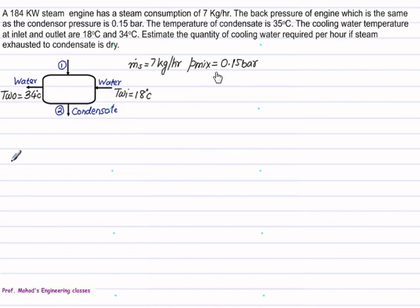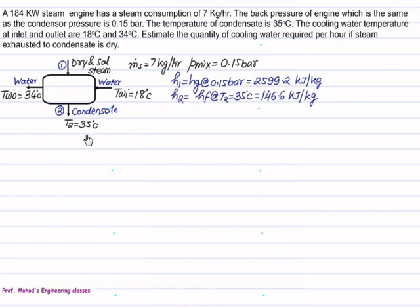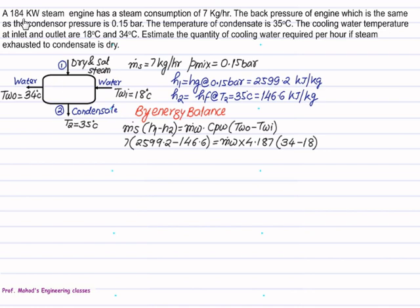The absolute pressure in the condenser P_mix is 0.15 bar. Temperature of condensate is given as 35. Cooling water enters at 18 and leaves at 34 degrees Celsius. Since the initial condition is dry, we have H1 equal to HG at 0.15 bar, and from steam table we get this value as 2599.2 kJ/kg. Similarly, the condensate temperature is 35 and condensate enthalpy is H2 equals HF at 35, which is 146.6 kJ/kg. How much power is developed by turbine has nothing to do with the energy balance.